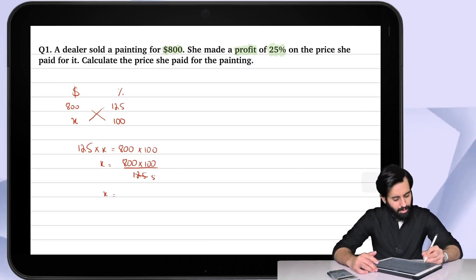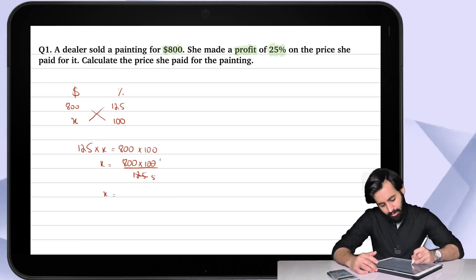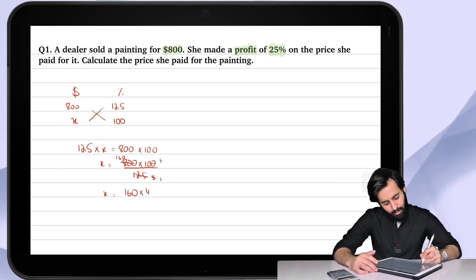25 times 5 is 125, 25 times 4 is 100. All you got to do is work out 160 times 4, which means I'm going to double 160 which is 320 and then double it again. So that's $640. This is the price that the dealer initially paid for it.